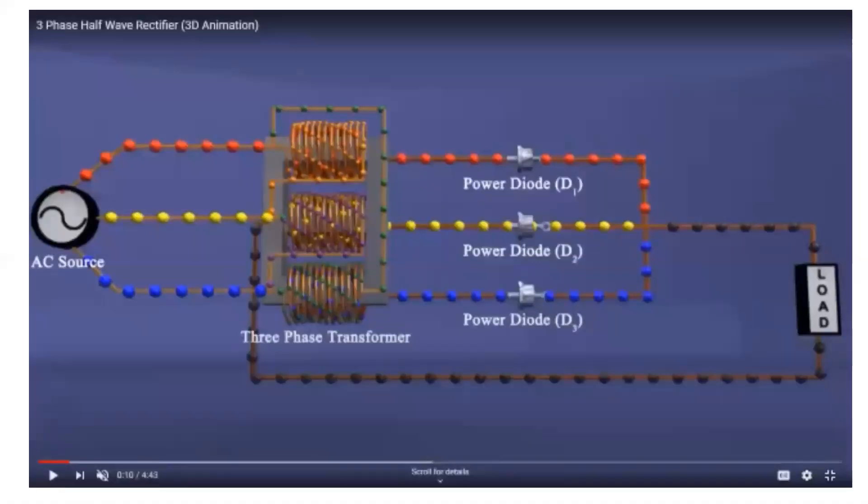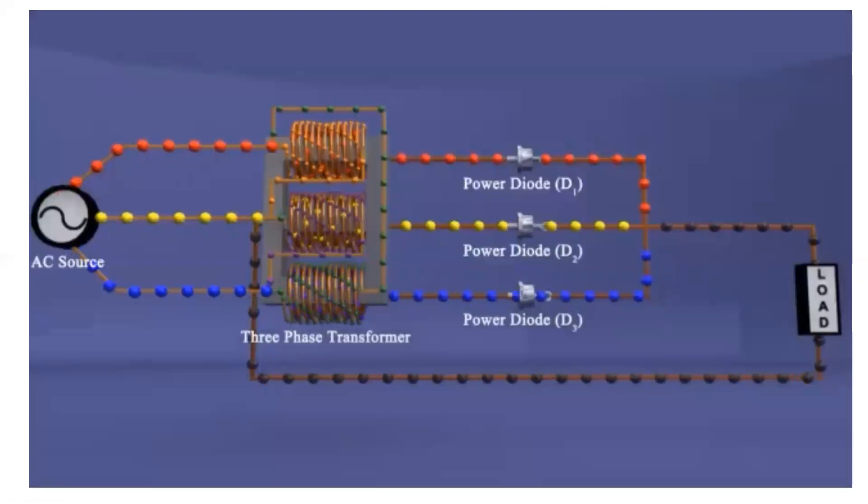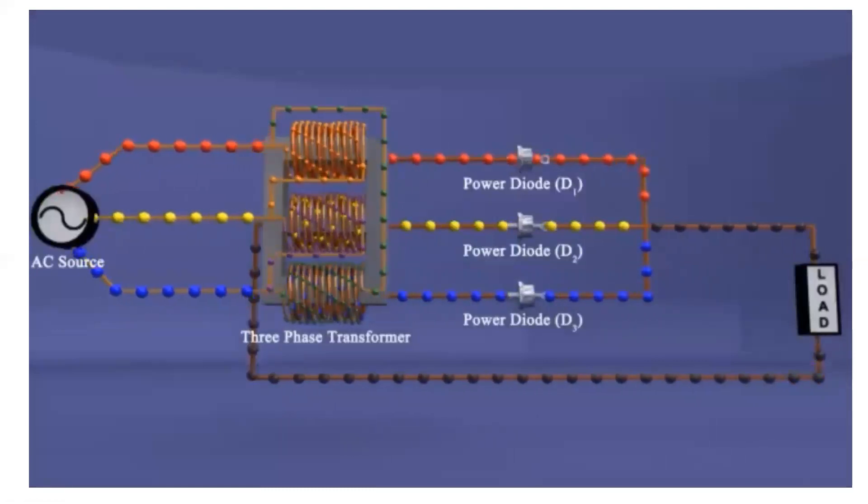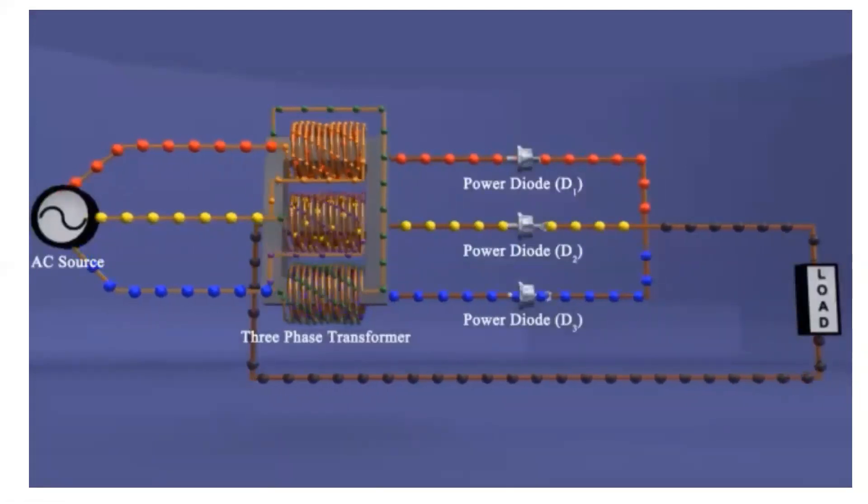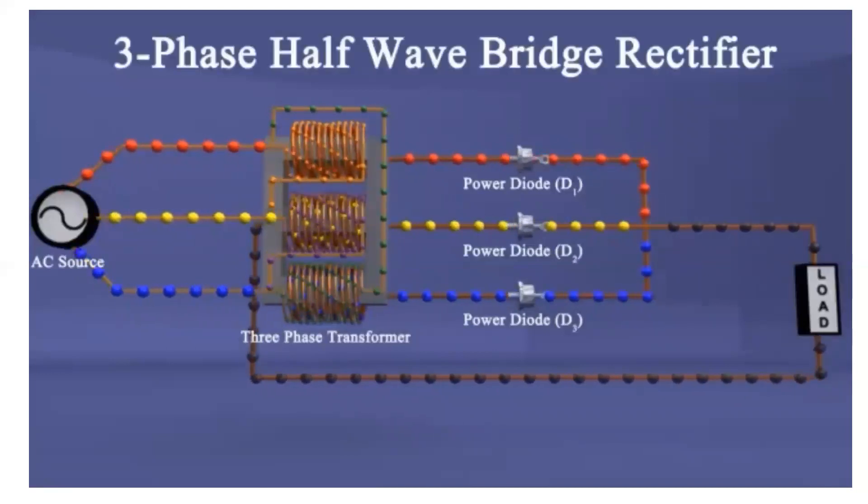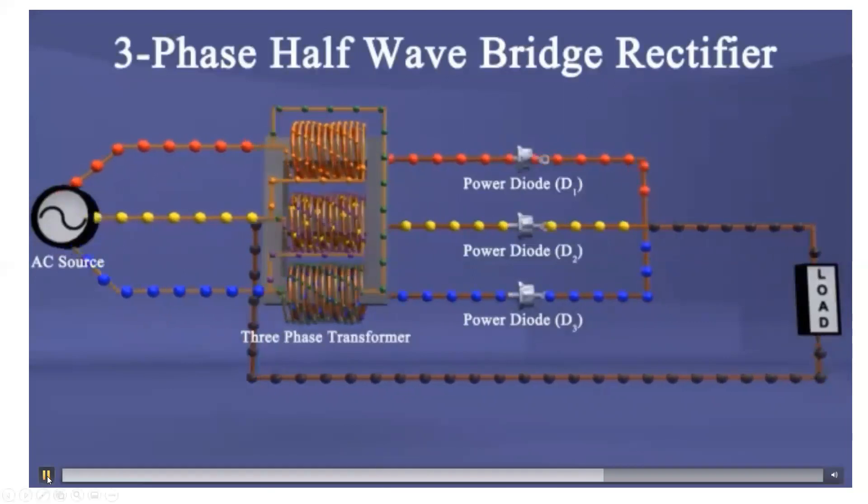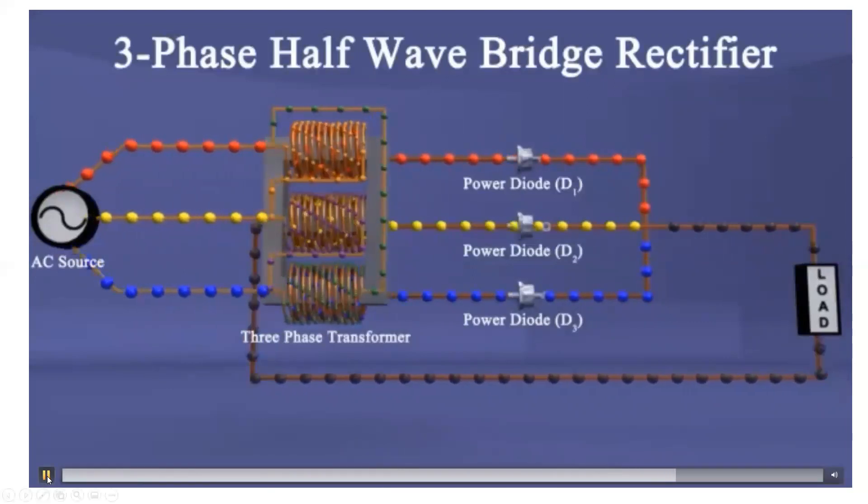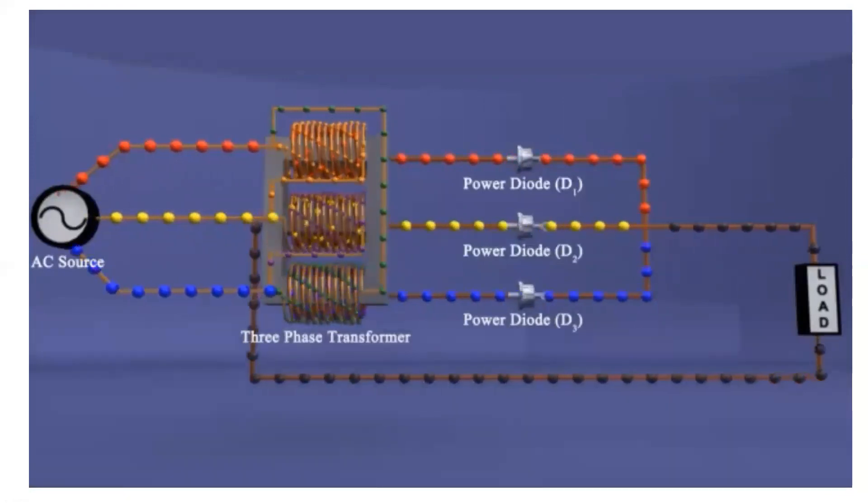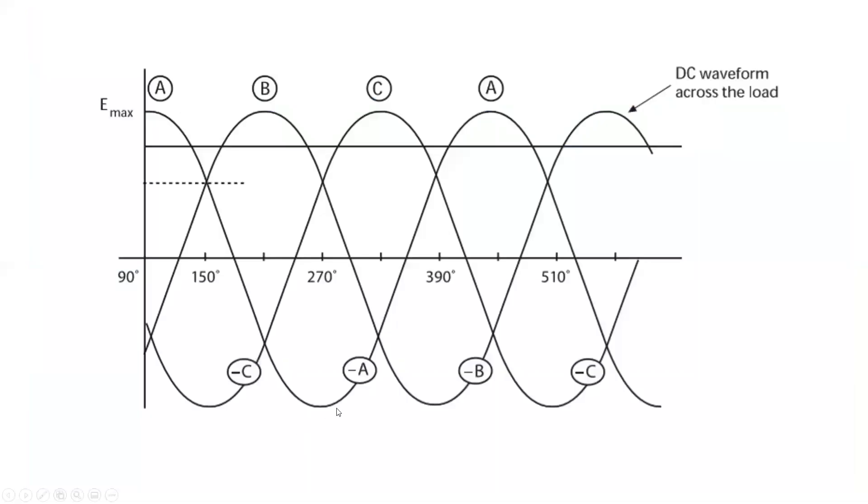Remember that when we're looking at three-phase, there's really only one phase that is pushing 100% in one direction. So we can see here that there's really only one diode conducting at any given moment. We can see the DC waveform across the load. It is much better than single phase full wave, but there is still quite a bump as we move from A to B to C and back to A.